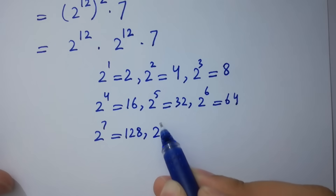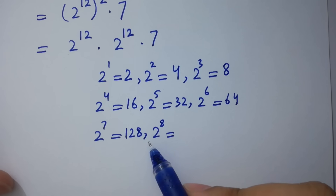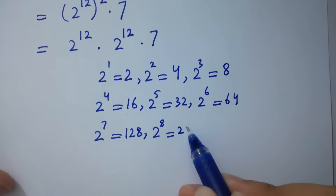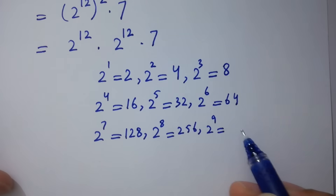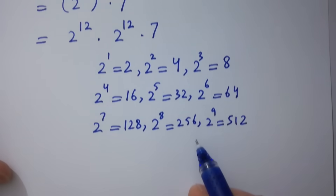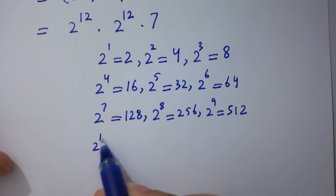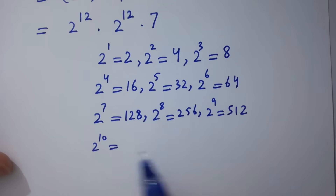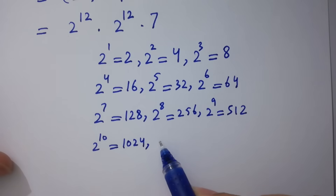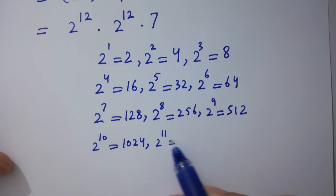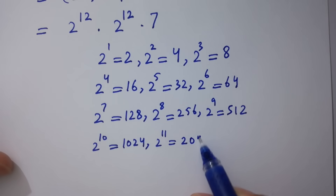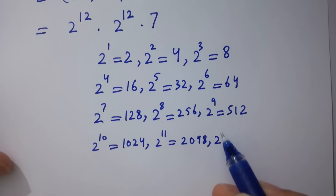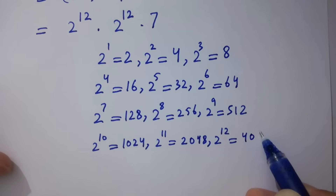Next, 2 to the power 7 equals 128. Next, 2 to the power 8 equals 256. 2 to the power 9 equals 512. Next, 2 to the power 10 equals 1024. Next, 2 to the power 11 equals 2048. Next, 2 to the power 12 equals 4096.